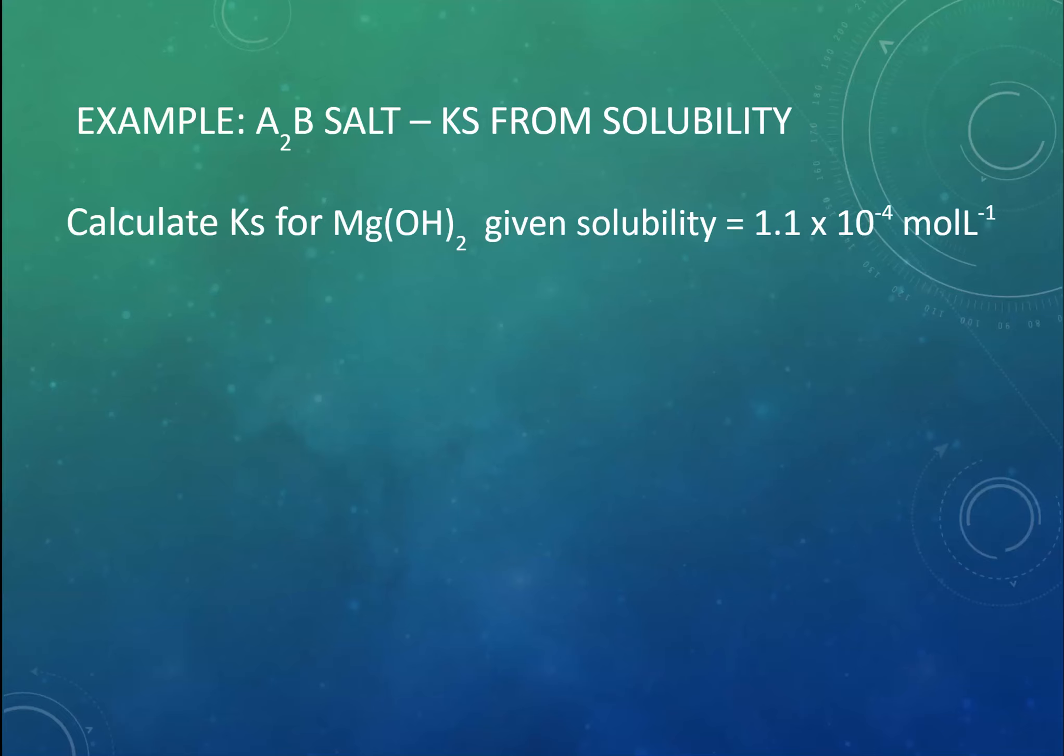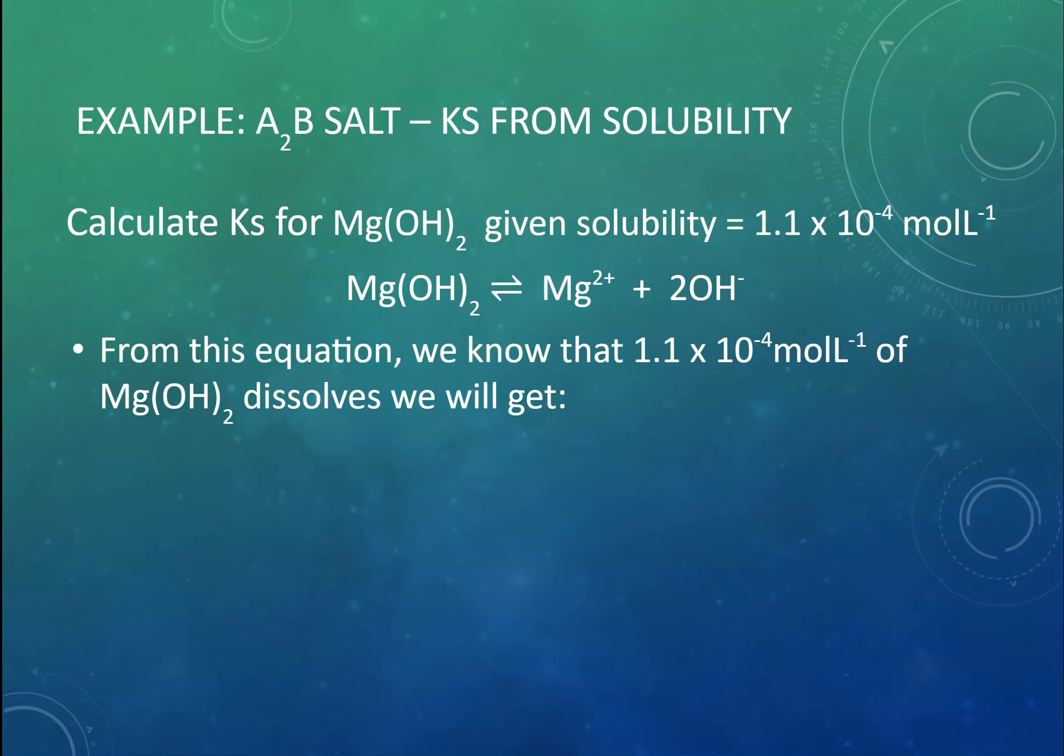So here's an example with magnesium hydroxide, where we know the solubility is 1.1 × 10⁻⁴ moles per litre. Again, we start off with our expression, Mg²⁺ and 2OH⁻. We know the solubility in this case. So we know that 1.1 × 10⁻⁴ moles of magnesium hydroxide will dissolve into 1 litre, giving concentrations for magnesium of 1.1 × 10⁻⁴ mole per litre and hydroxide of 2.2 × 10⁻⁴ mole per litre.